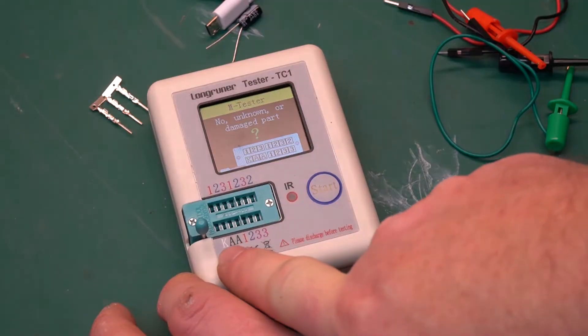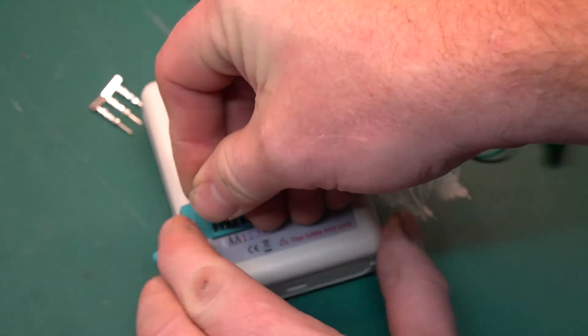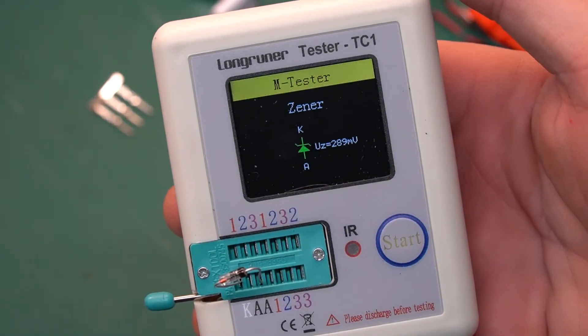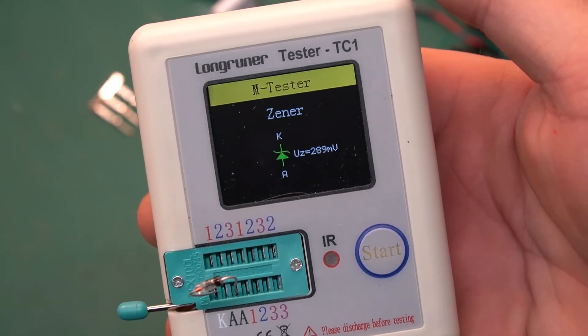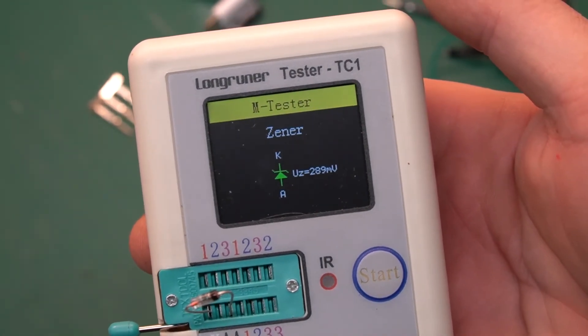The Zener diodes get plugged down in here into the special ports K, A, and A. Let's plug a Zener diode in and see what it does for us. And check that out. It gives us the pin layout of the diode and it also gives us the Zener voltage, which is very handy, specifically if you don't have any data sheets on the diodes that you happen to have.